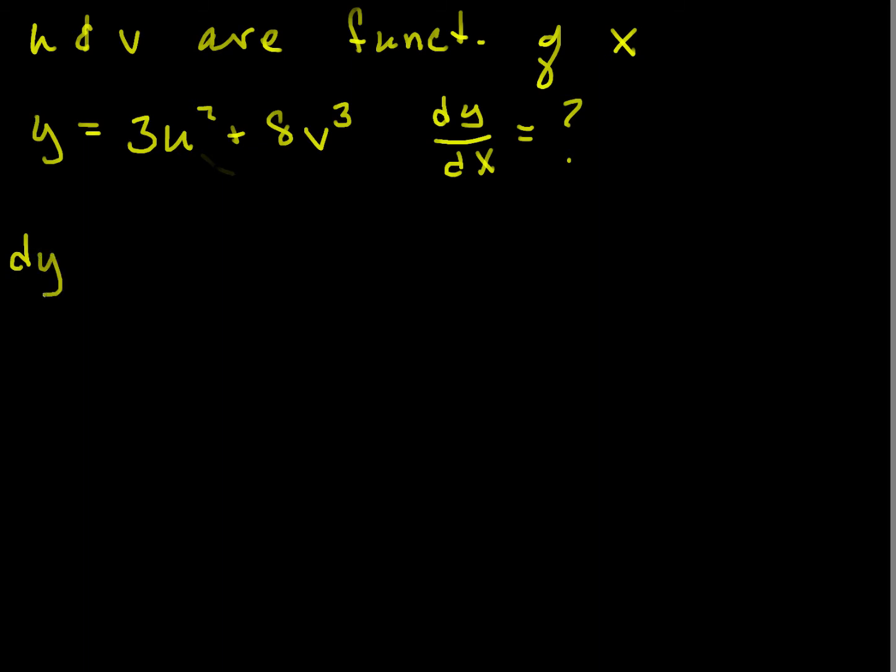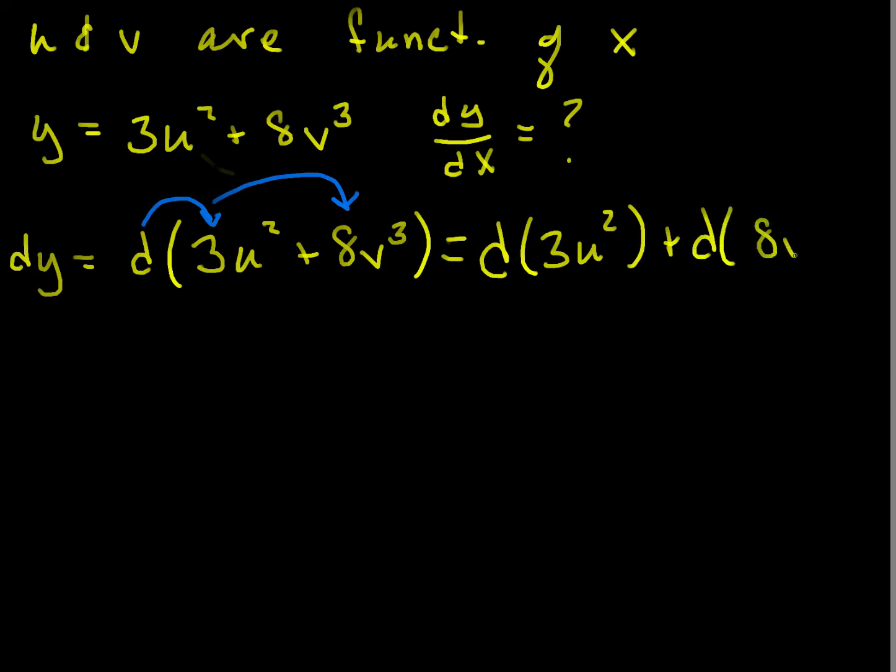So dy is equal to the differential of 3u squared plus 8v cubed. And by this point, I'm hoping that you recognize that this differential will distribute across addition. And further, well, let's just take baby steps. So I was going to skip a bunch of steps, but let's just go through. This is the differential of 3u squared plus the differential of 8v cubed.